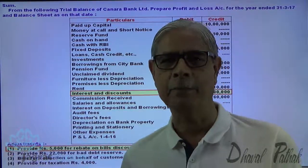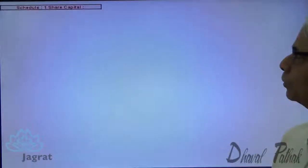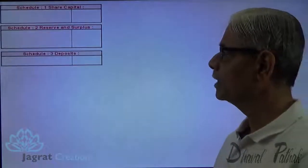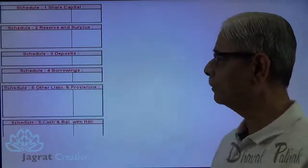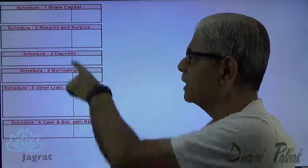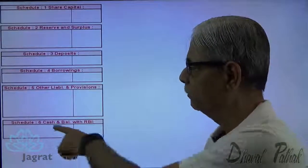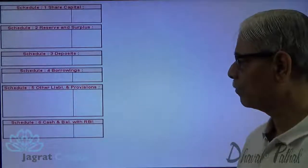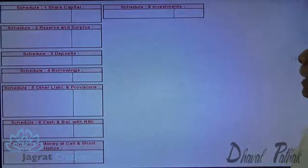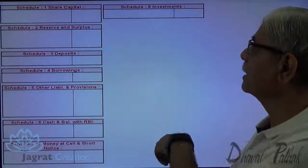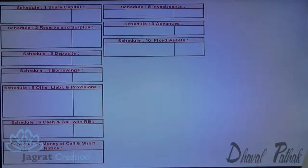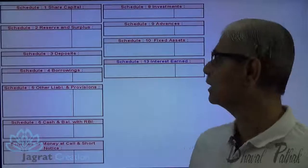Observe the schedule on the screen that I prepared for you. Schedule 1 is share capital, second is reserves and surplus, third is deposits, fourth is borrowings, fifth is other liabilities and provisions — these are the five schedules of the liability side. Then on the asset side: cash and balance with other banks, money at call and short notice, balances with other banks, investments, advances, and fixed assets.